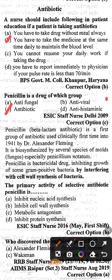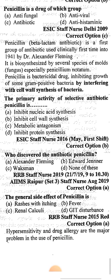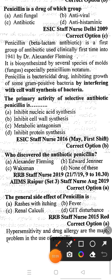Penicillin is biosynthesized by several species of molds, that is fungus, especially Penicillium notatum. Penicillin is a bactericidal drug inhibiting growth of some gram-positive bacteria by interfering with cell wall synthesis of bacteria. The next question: the primary activity of selective antibiotic penicillin is — Option A: inhibit nucleic acid synthesis, Option B: inhibit cell wall synthesis, Option C: metabolic antagonism, Option D: inhibit protein synthesis. The correct answer is option B, inhibit cell wall synthesis.